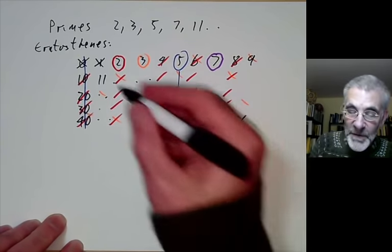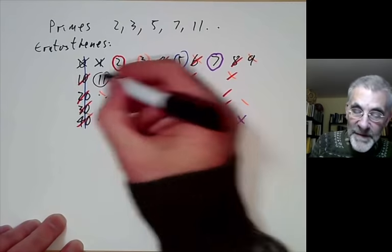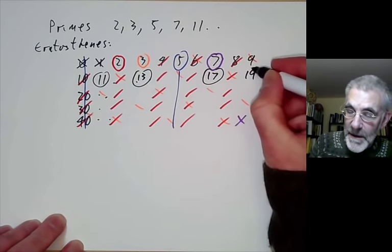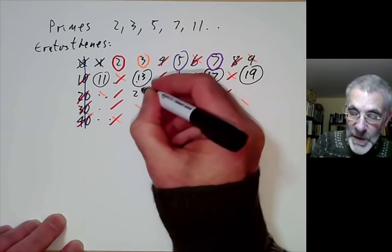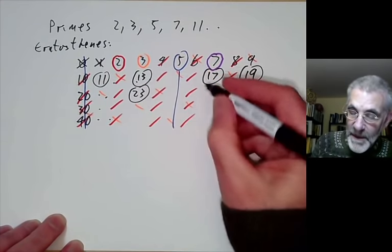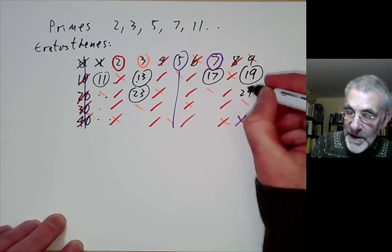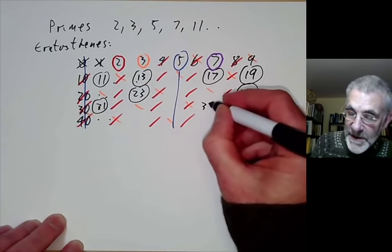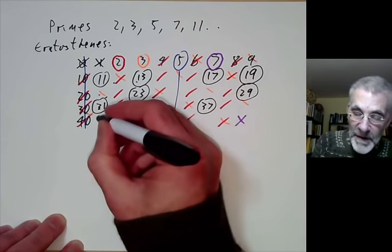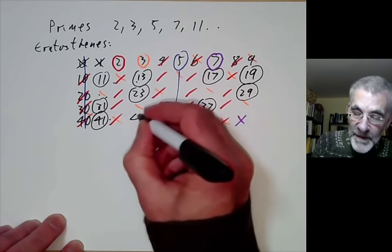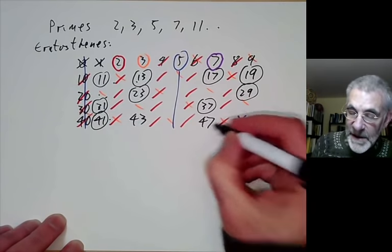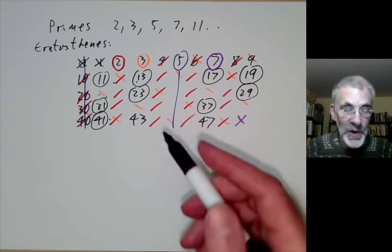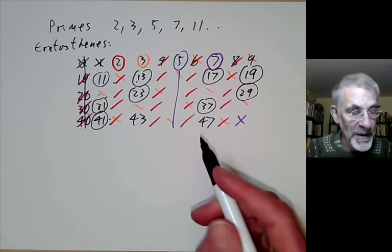If we look and see what numbers we've got left, we've got 11, 13, 17, 19, 23, 29, 31, 37, 41, 43, 47. If you're doing number theory you very soon learn all the primes up to about 100.